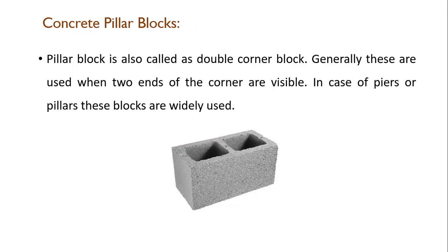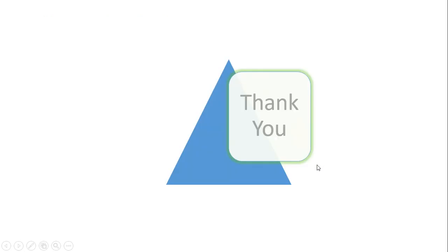The last is the concrete pillar block, also called a double corner block, so it can be used from both ends with no locking arrangement. These are used when both ends of the corners are visible, and are widely used in case of piers or pillars. This concludes the discussion on cellular, solid, and hollow concrete blocks. Thank you.